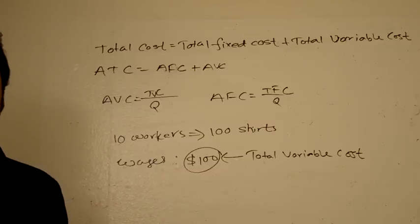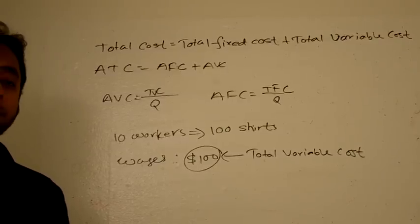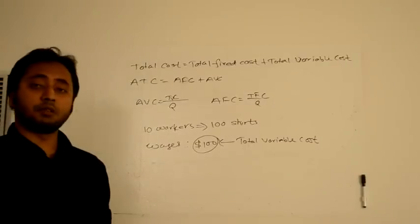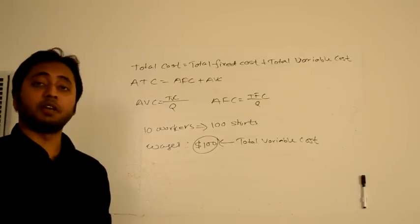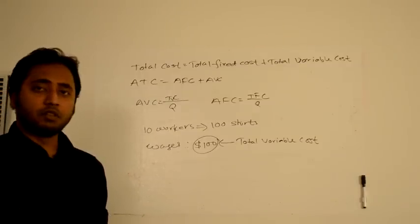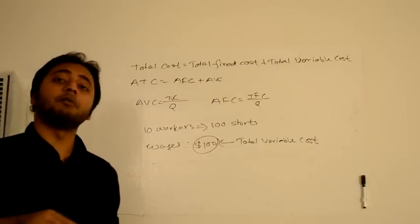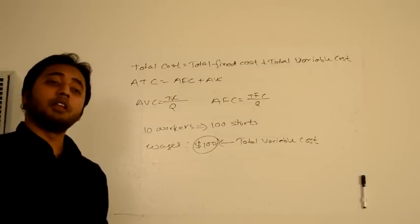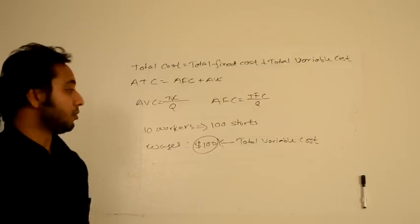Fixed cost is a cost which doesn't change when you increase your output. An example is the rent you pay for the land you're using — even if you're not producing anything, you have to pay the rent in the short run. Whether you produce 50 or 100 goods, you still pay the same rent. So rent is fixed cost, but salary is variable cost because producing more output requires hiring more workers and paying higher total salaries.